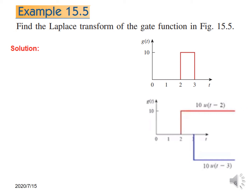To terminate the function at this point, we have to subtract a function of equal strength. So we subtract a function at this point: 10u(t minus 3), at t equal to 3. With the minus sign it is on the negative side. And if we add the two, we will get this gate function.